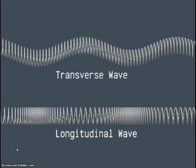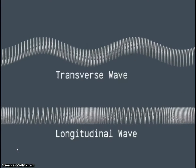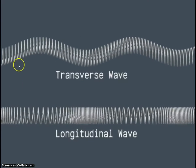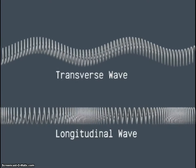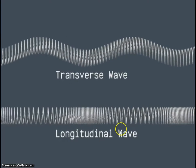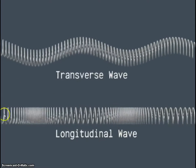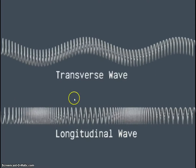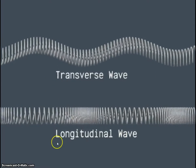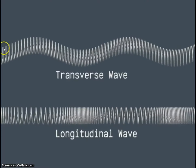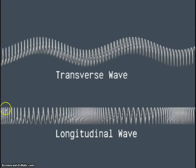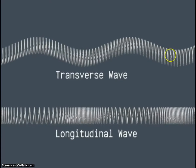This is a movie clip of a slinky being moved to form a transverse wave and a longitudinal wave. They're both progressive waves because the wave energy is moving forward. The difference between a transverse wave and a longitudinal wave is the direction of the oscillations relative to the movement of the wave energy.